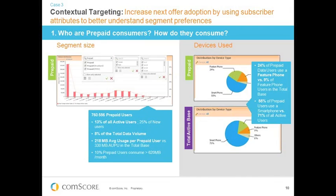The second piece of the puzzle is understanding the devices prepaid users use. Prepaid users are much more likely to have a feature phone than those on postpaid or across the entire active subscriber base — some 24% of the prepaid user base have a feature phone compared to 9% in the total user base. Consequently, only 55% of prepaid users have a smartphone compared to 71% across the entire base.